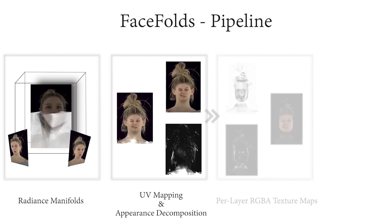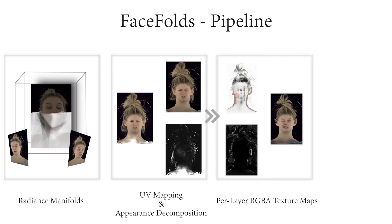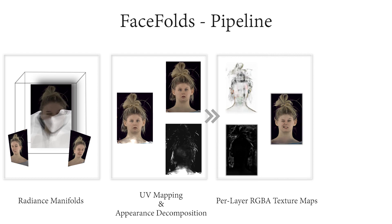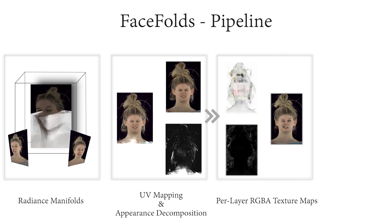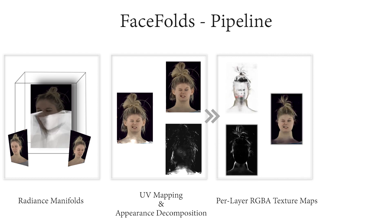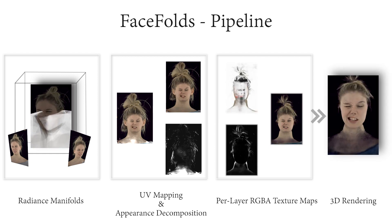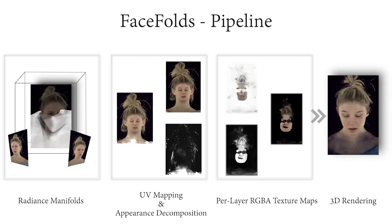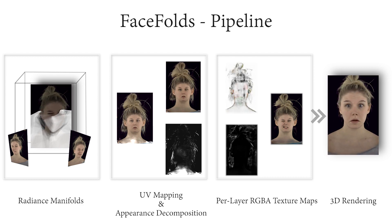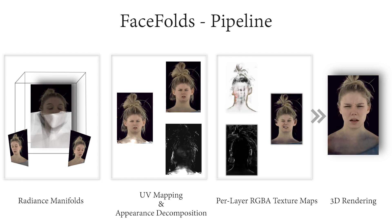We then export the manifolds as a layered mesh and the view-independent radiance as a per-layer RGB and alpha texture, encoded into a video. Our exported layered mesh and video texture can be trivially rendered very efficiently in any legacy renderer using simple alpha blending.